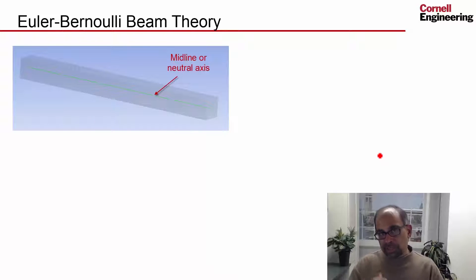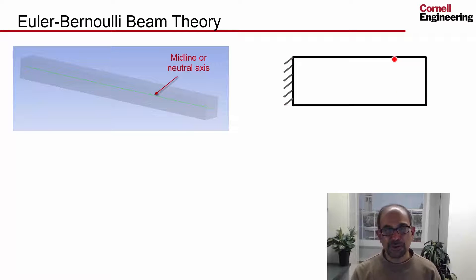So Euler-Bernoulli beam theory, quickly what the idea is that you look at the midline, which is also called the neutral axis, and you say, once I figure out what the deformed state of the midline is, I can calculate everything else from that. So you reduce it to finding the deformed state of the midline. And if I have a two-dimensional view of the beam, and let's say that's the midline, and you'll have to pardon my chicken scratch, and I pick a point like that, the neutral axis, I'll exaggerate the deformation. Let's say, once I put the load on, I'll get something like that.